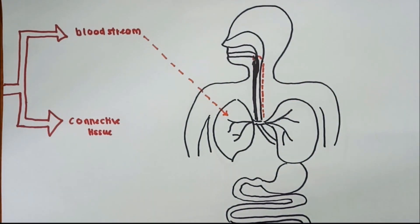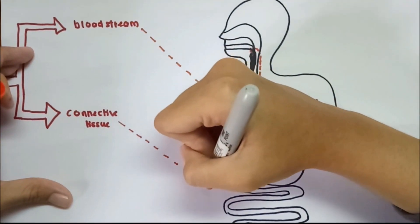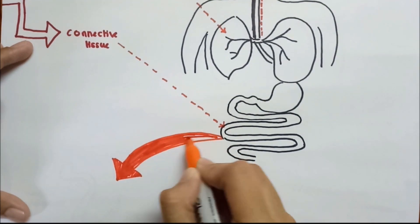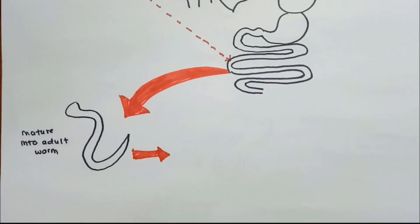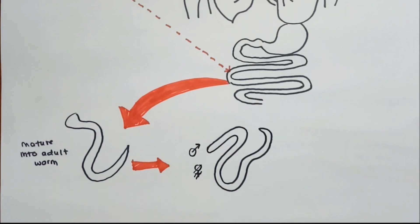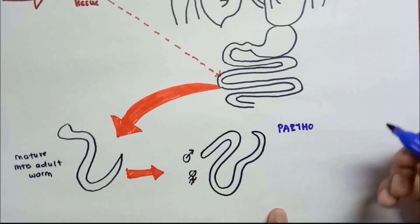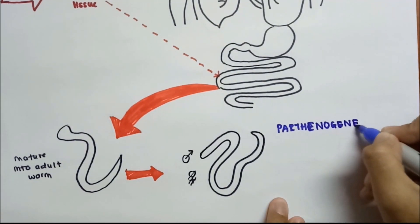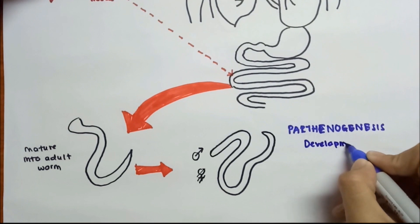Via the bloodstream route, larvae are coughed up, swallowed, and arrive at the small intestine. Via the connective tissue route, filariform larvae penetrate the connective tissue and also arrive at the small intestine. Once arriving at the small intestine, the filariform larvae (L3 stage) molt twice and become adult female worms only. These female worms inhabit the epithelium of the small intestine and produce eggs — even without the presence of male adult worms.